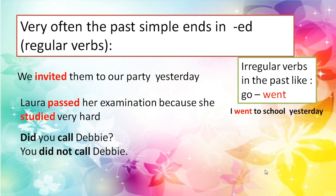The simple past. Very often, simple past verbs end in ED and we call them regular verbs. For example: 'We invited them to our party yesterday.' 'Laura passed her examination because she studied very hard.' So 'invited' and 'passed' are regular verbs because they end with ED without changing the form of the verb. Changing the form of the verb means it is an irregular verb.